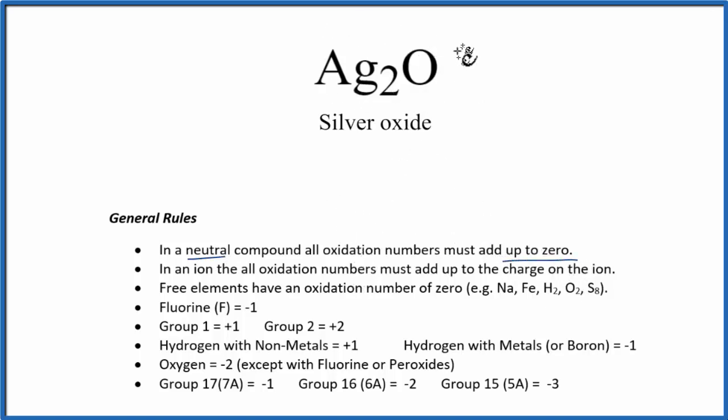So let's figure out the oxygen first. Silver doesn't show up on our list here. It's often plus one, but let's check because we know that oxygen is going to be minus two, except with fluorines or peroxides. So if this is minus two, that means that each one of these silver atoms here needs to be plus one.